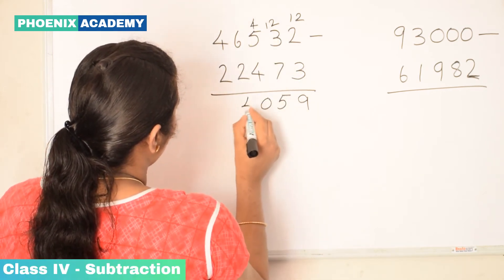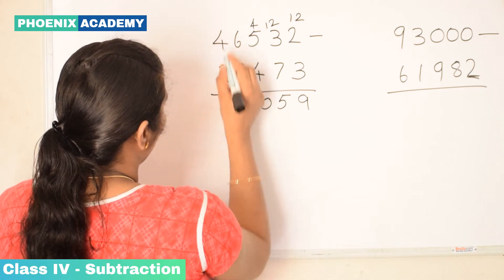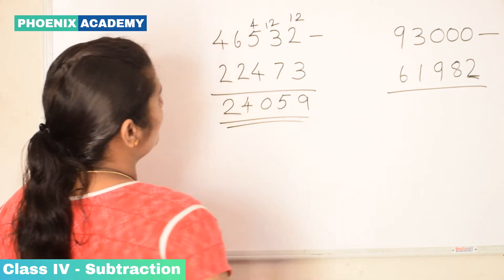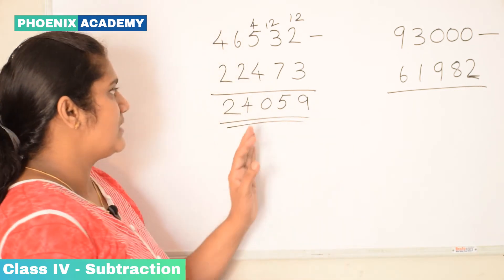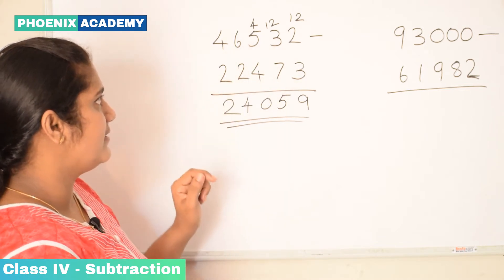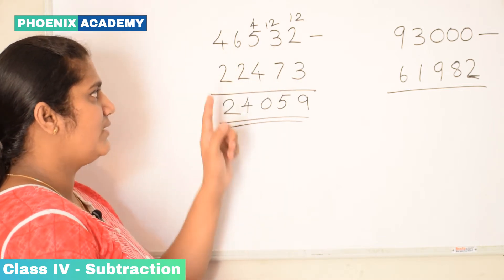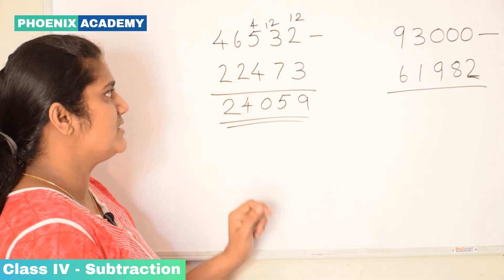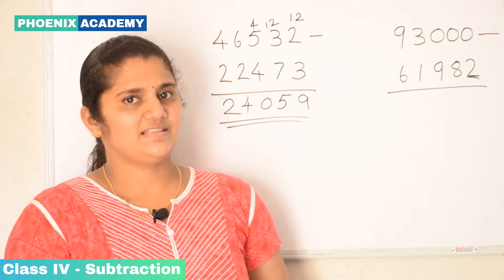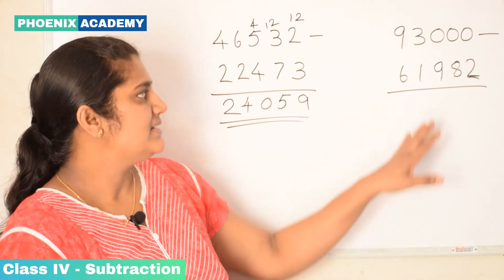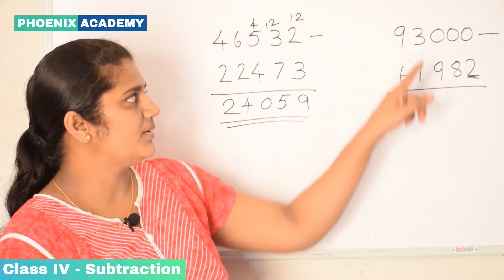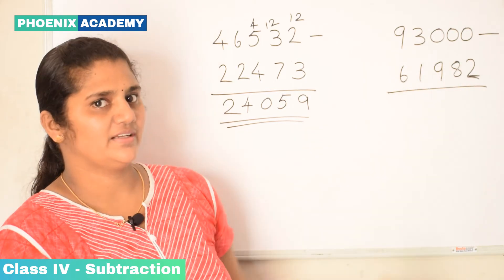6 minus 2 is 4. 4 minus 2 is 2. So the difference of 46,532 and 22,473 is 24,059.